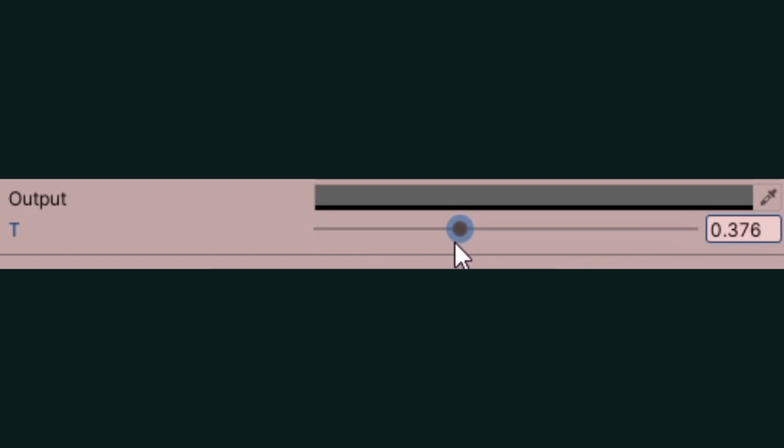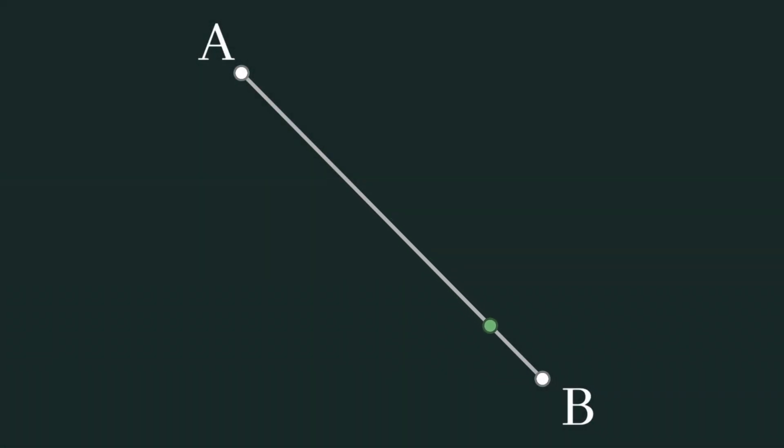But, it seems a bit unintuitive to think about. So far, we've been working with LERP in a spatial sense, in terms of the distance between two points. So, how can this be applied to a colour, exactly? Well, think of it like this.